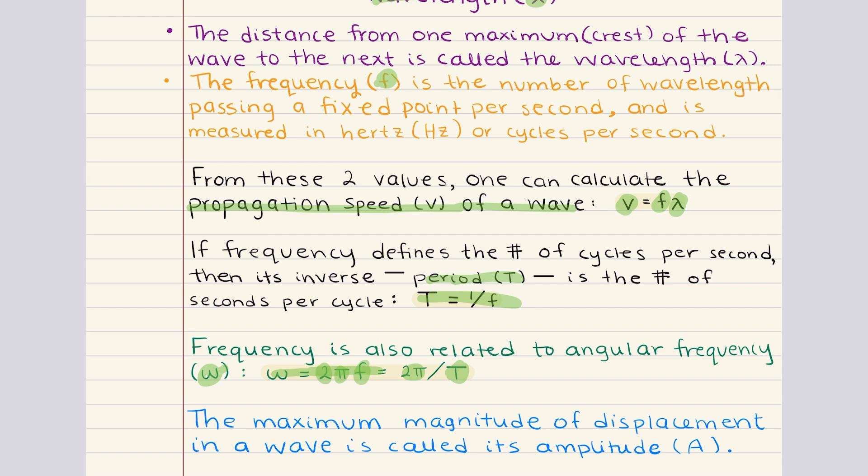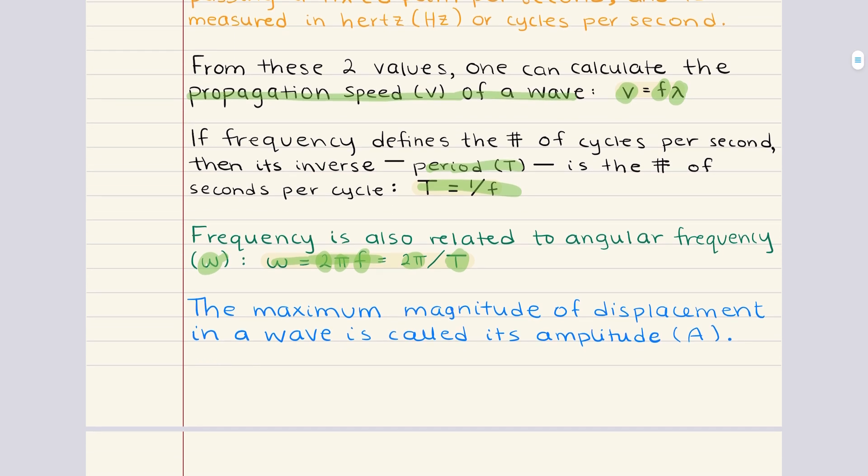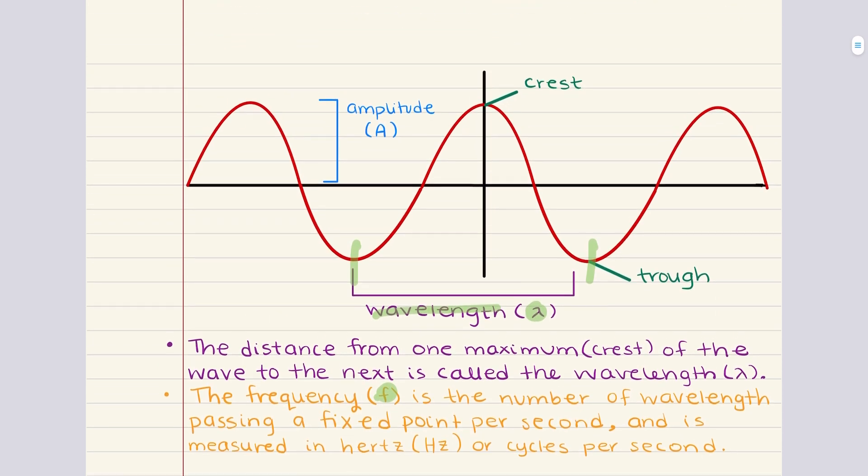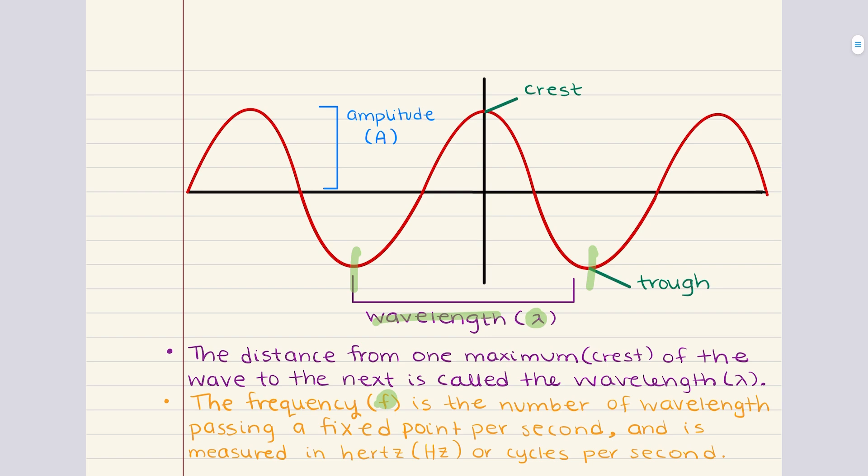Now, finally, we want to talk about amplitude. This measures the maximum displacement of particles from their equilibrium position. So, in a graph of a wave, the amplitude corresponds to the height of the crests or the depth of the troughs. The greater the amplitude, the more energy the wave carries. In practical terms, larger amplitudes often result in more noticeable effects, such as louder sounds in the case of sound waves or brighter light in the case of electromagnetic waves.